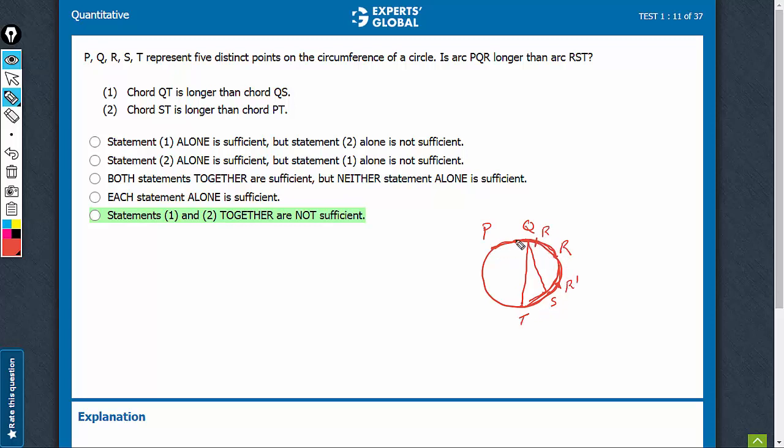Visually, you can see it. PQR could be only this much while RST is much bigger. But if R were here, then PQR becomes big and RST remains small. So statement one is not sufficient.